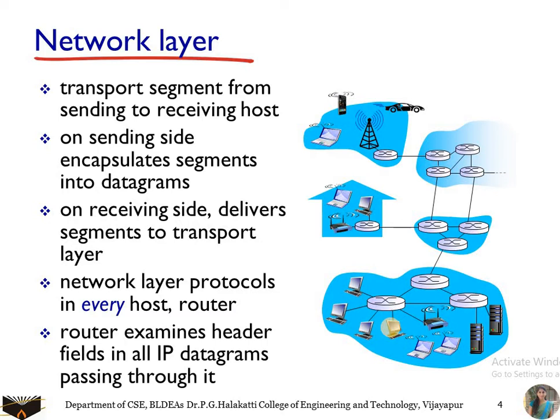Packet delivery is done through IP addresses, also called logical addresses. The network layer transports segments from the sending to the receiving host. On the sending side, it encapsulates the segments into datagrams. The network layer receives segments from the transport layer and those segments are encapsulated in datagrams. A datagram contains a header followed by the segment. On the receiving side, it delivers the segments to the transport layer.